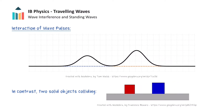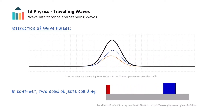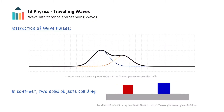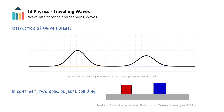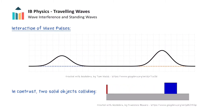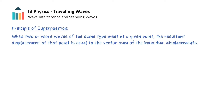The resultant wave from two or more waves meeting at some point in space is described by the principle of superposition. The principle of superposition states that when two or more waves of the same type meet at a given point in space at the same time, the resultant displacement at that point is equal to the vector sum of the displacements of the individual waves.